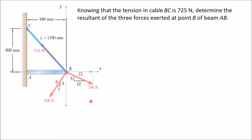The y-component of 780 Newton is negative because it acts below the x-axis. Similarly, both 780 Newton and 500 Newton act below the x-axis, so their y-components are negative. Any force above the x-axis — in the first or second quadrant — has a positive y-component. The x-component of 500 Newton is also negative since it acts to the left of the y-axis.